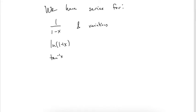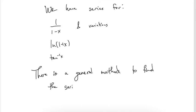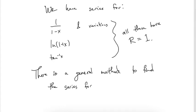There is actually a general method to find the series for any function — or more precisely, any infinitely differentiable function. All of our previous series had radius of convergence equal to 1 because they were all derived from that first geometric series. When you take integrals or derivatives of a series, the radius of convergence stays the same. So all those series converge when x is within one unit of zero.